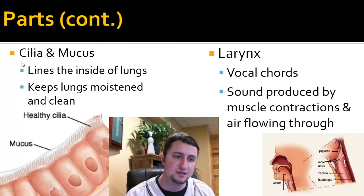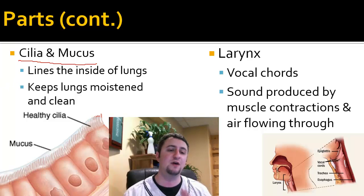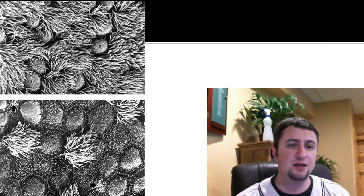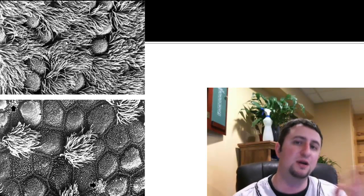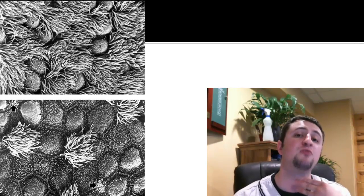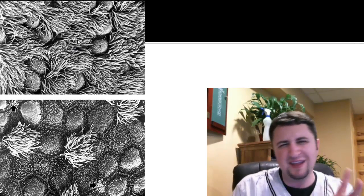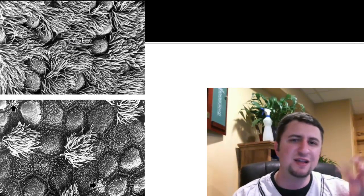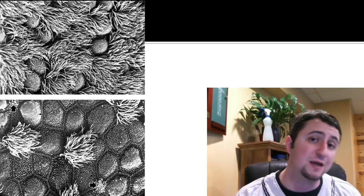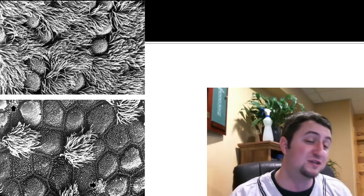Lining the lungs is a lining of cilia and mucus. Cilia are little finger-like projections that line all the inside of our lungs. They beat in one direction — they move mucus, which is produced by the cilia, up towards our throat, from the bottom up. Every time you breathe, you're breathing in dust and pollution and all this stuff. Everything that the mucus collects gets pushed up to your throat, you swallow it, it goes down into your stomach, and the stomach acid kills whatever was found in that mucus. It's actually a way our bodies keep clean.